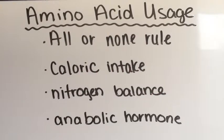There are four different types of amino acid usage in the body. First, we have the all-or-none rule, which is an amino acid needed to make a particular protein must be present in the cell at the same time and in sufficient amounts. If one is missing, the protein cannot be made. Next, we have caloric intake, which is a diet that must supply sufficient carbohydrate or fat calories for ATP production.